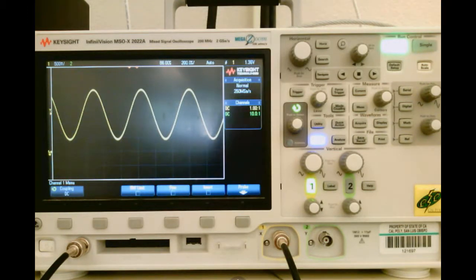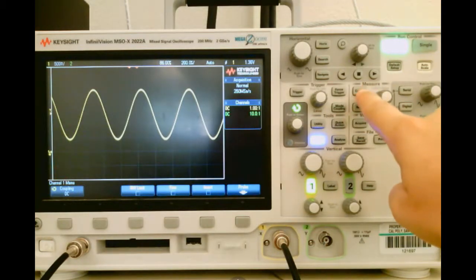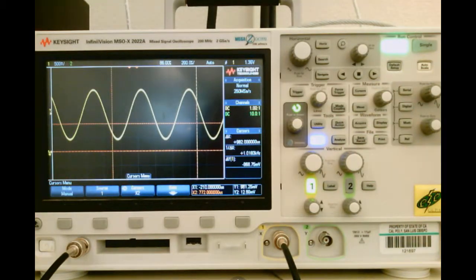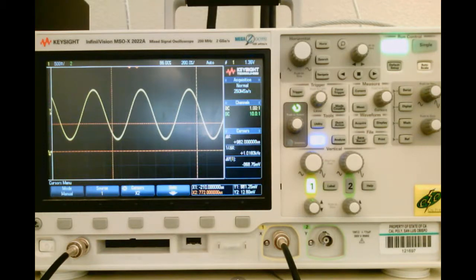If I want to have a more precise measurement, I can use the Cursors menu. So if I push Cursor, you'll see that these lines come up on the screen, which will allow me to put the cursors at exact points on the waveform that I'm interested in.